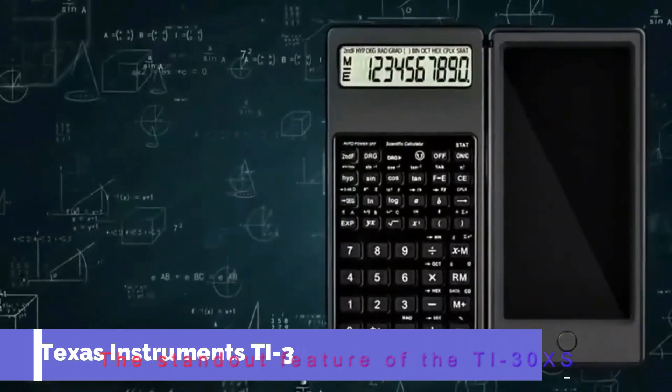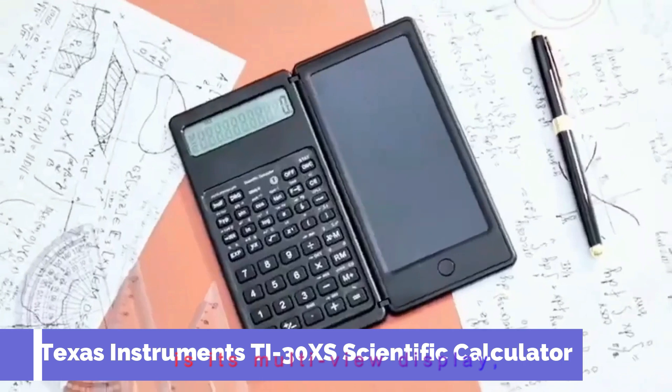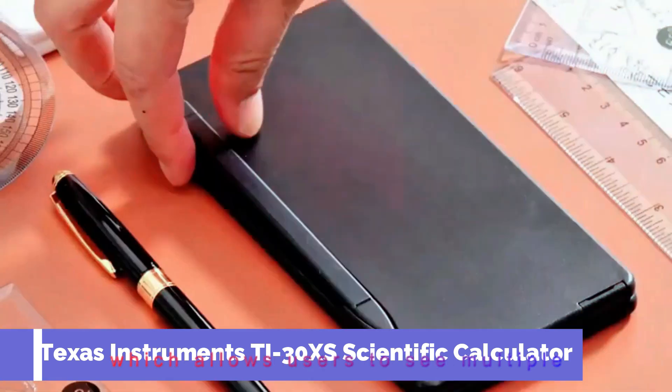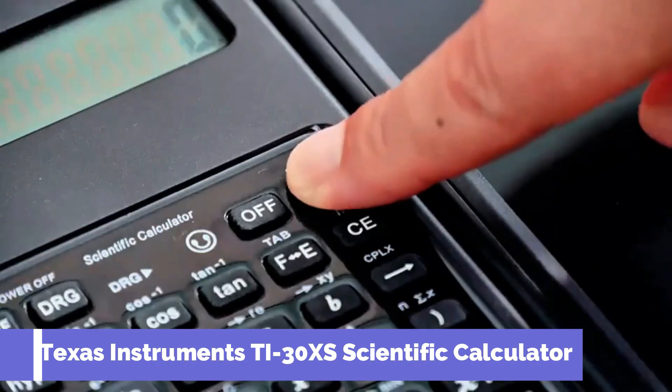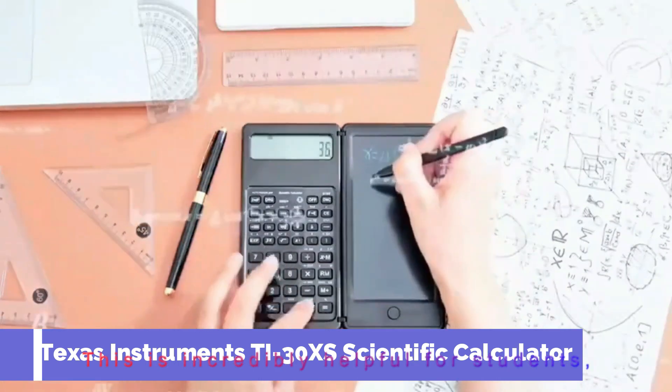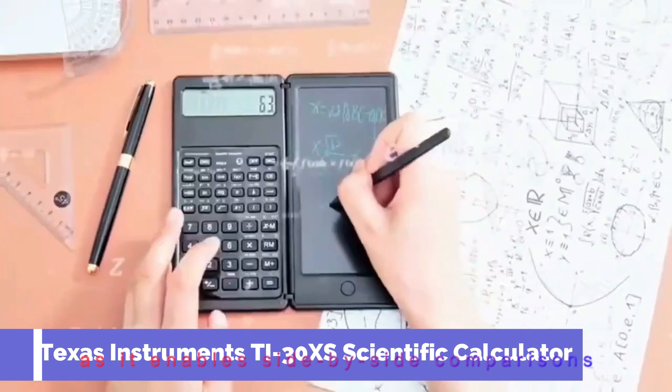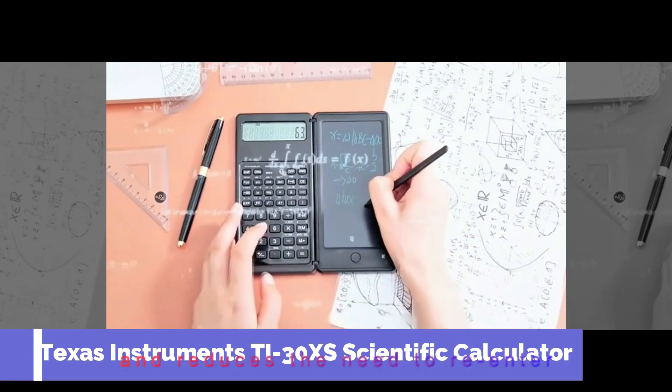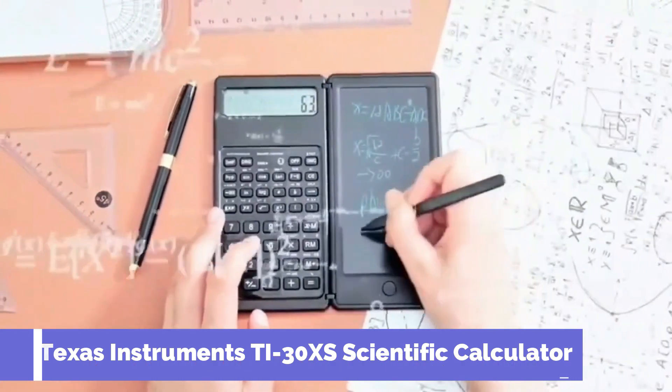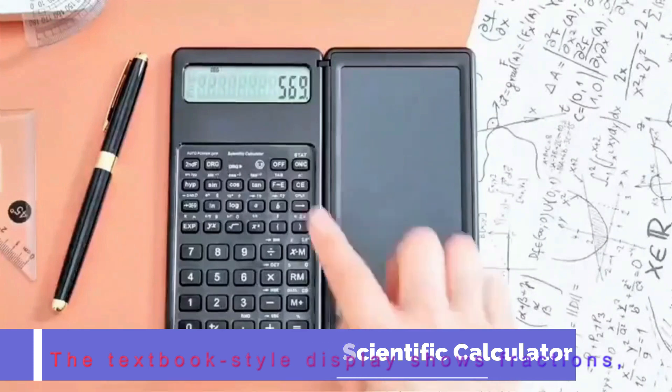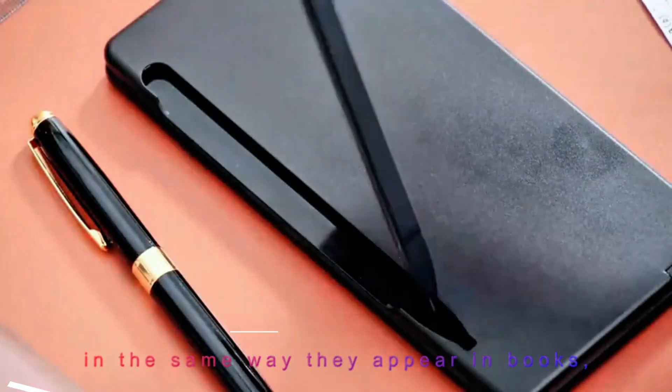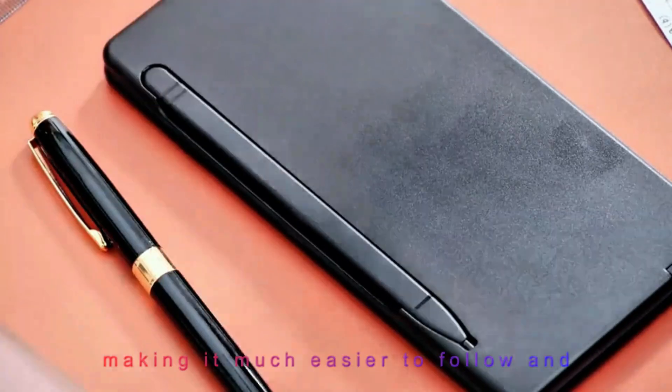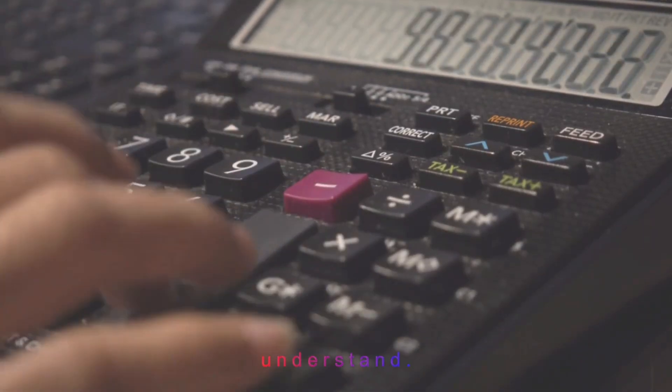The standout feature of the TI-30XS is its multi-view display, which allows users to see multiple calculations on the screen at once. This is incredibly helpful for students, as it enables side-by-side comparisons and reduces the need to re-enter expressions. The textbook-style display shows fractions, exponents, and square roots in the same way they appear in books, making it much easier to follow and understand.